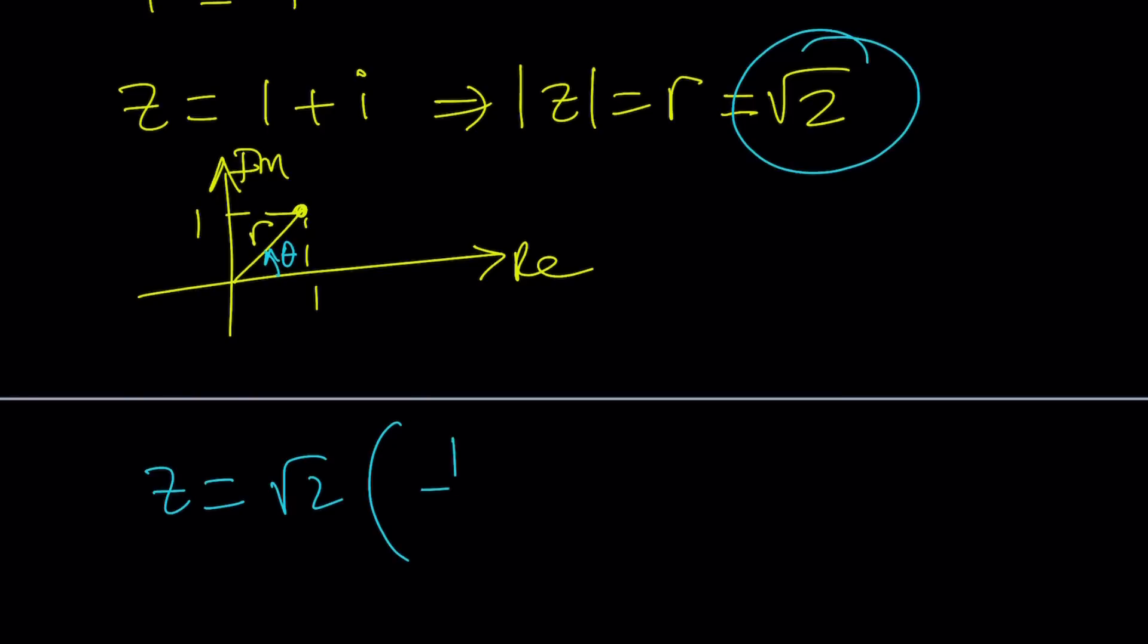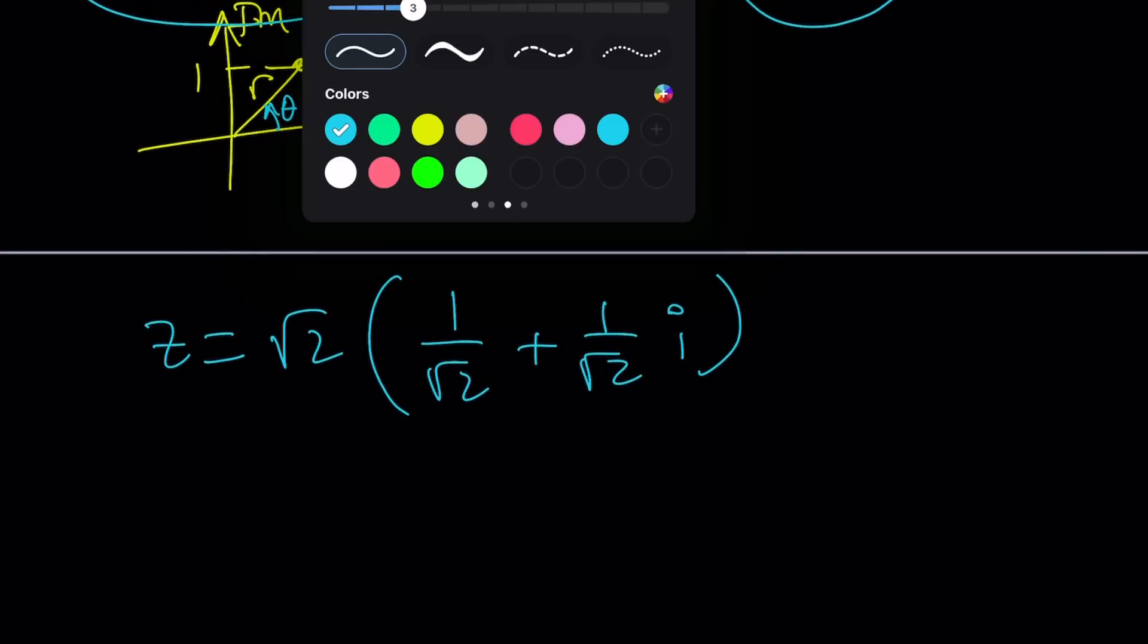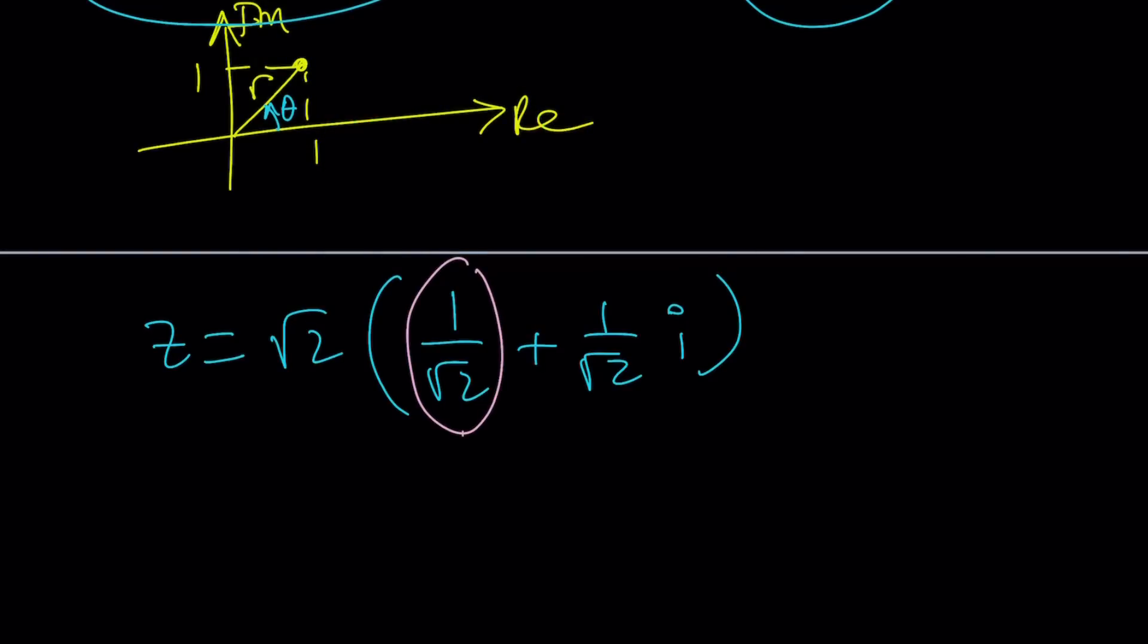Then inside I'm going to have 1 over square root of 2 plus (1 over square root of 2)i. Because remember our number was 1 + i, I just factored it. This becomes a complex number in polar form. This is going to be our cosine theta, this is going to be our sine theta trigonometrically.